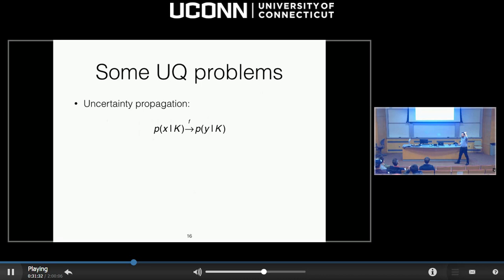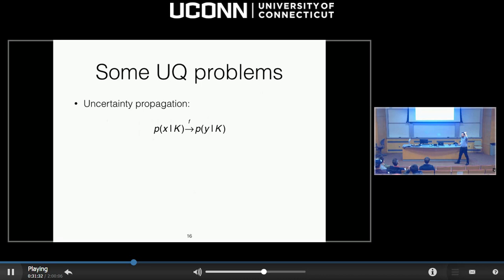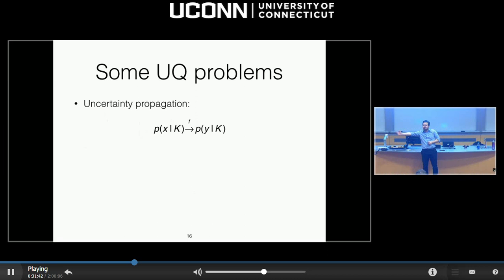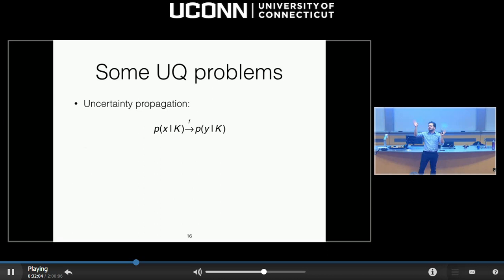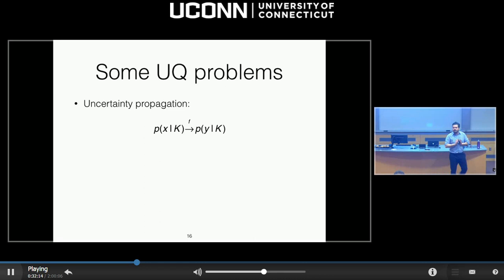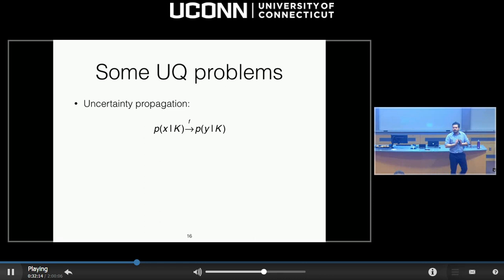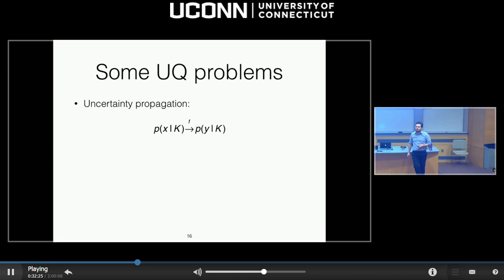Some of the UQ problems: First, uncertainty propagation — you assign a probability distribution to the inputs of the model, and your goal is to estimate the induced uncertainty at the output. Y could be a time series, a picture, a probability density — anything. If you assign a distribution on the input, what is the induced distribution of the output? That's the classic uncertainty propagation problem. The model F can be a dynamical system — the output Y can be anything you're interested in, including a function of time.